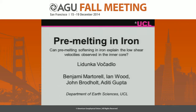We're focusing on HCP iron predominantly, but we might look at something else as well. Most of the work I'm going to show has been done by Benjamin Martorell. We want to answer the question: can pre-melting softening in iron explain the low shear velocities observed in the inner core?